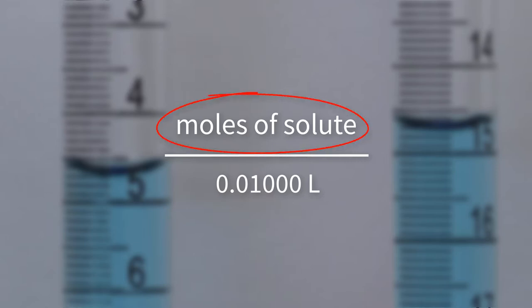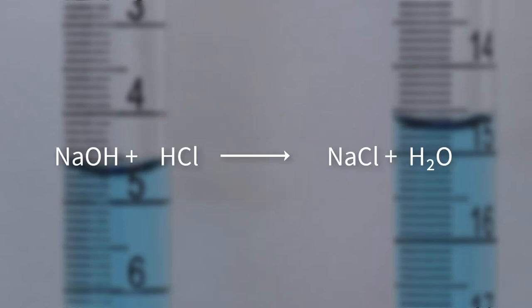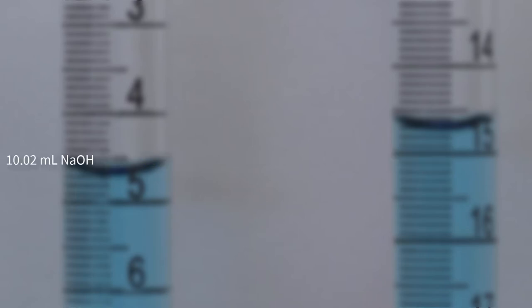The titration data will be used to calculate the number of moles of acid in the solution. To do that, we need the balanced chemical equation to give us the stoichiometric ratio. For the reaction between sodium hydroxide, the titrant, and hydrochloric acid, the analyte, the stoichiometric ratio is 1 to 1. For every mole of sodium hydroxide added to the flask, it reacts with a mole of hydrochloric acid. From the burette reading, we added 10.02 milliliters of sodium hydroxide. Because of limited screen space, we will have to break this calculation up, but it could be completed in a single line.